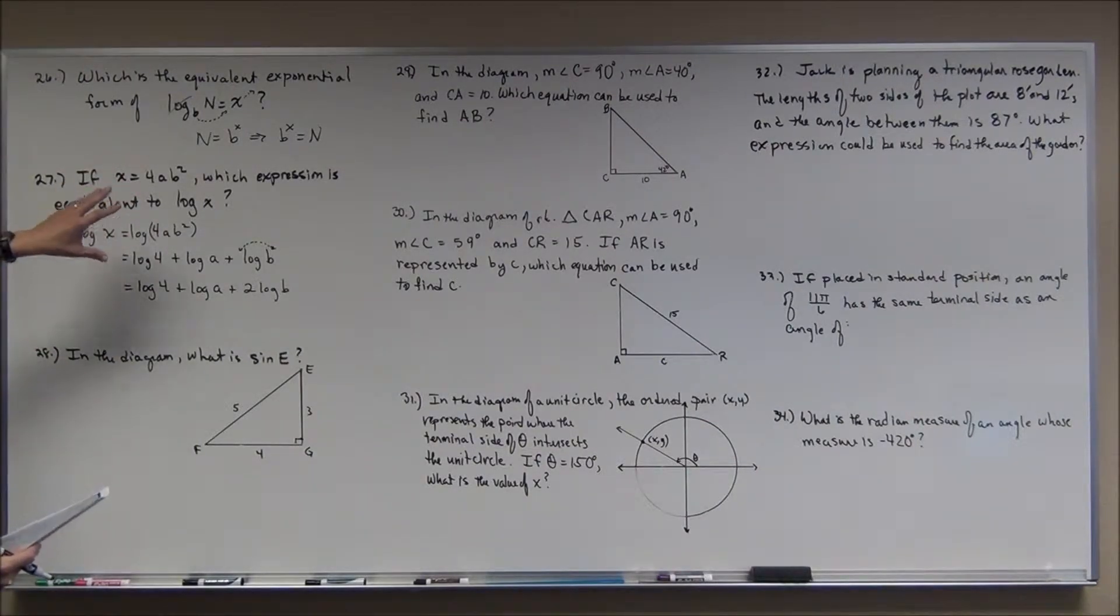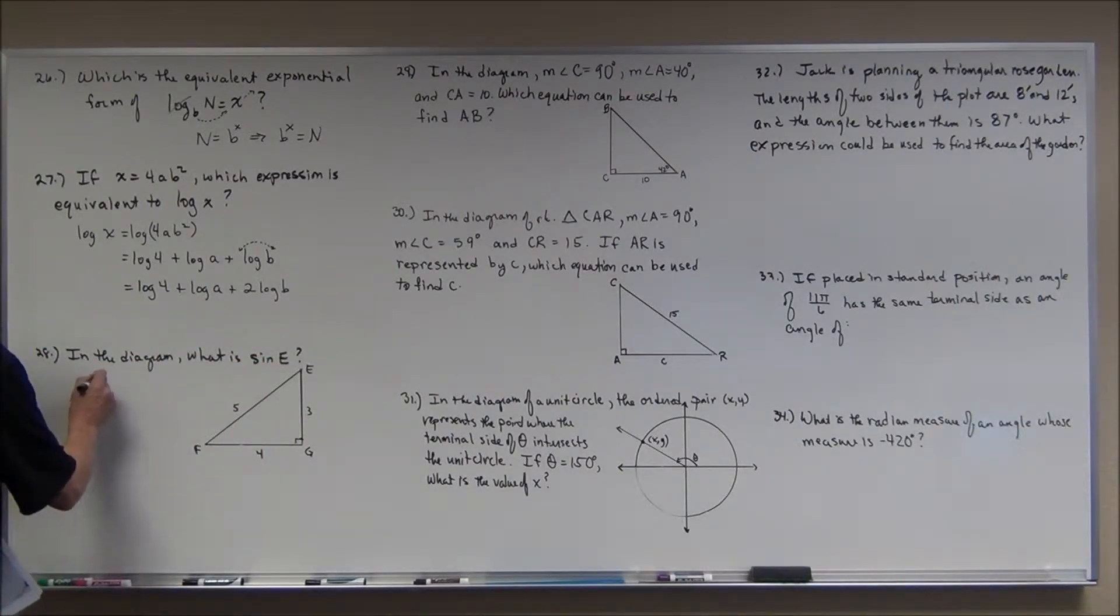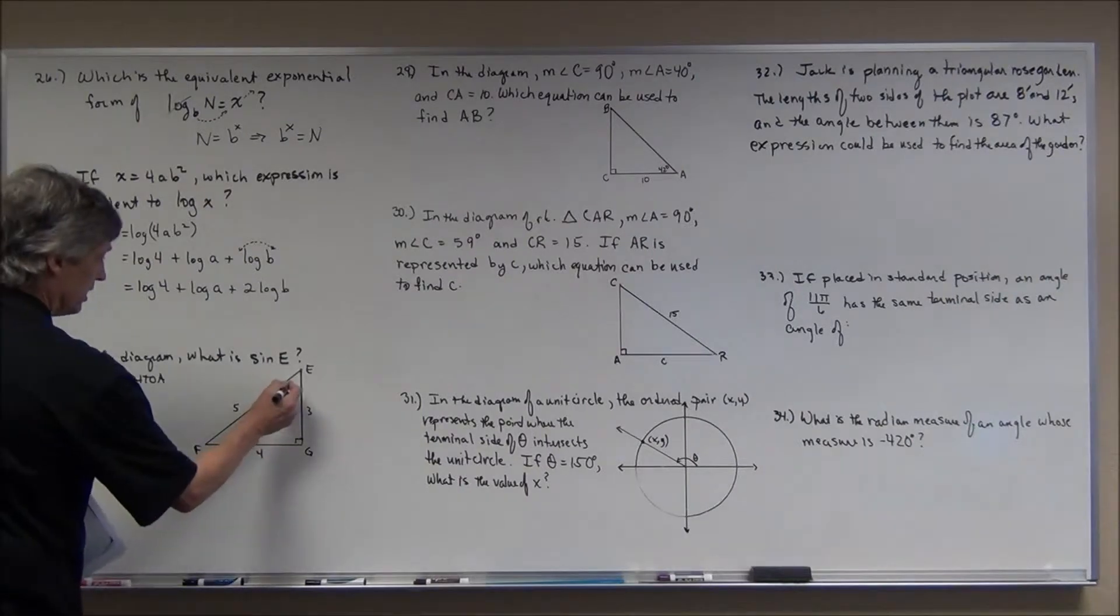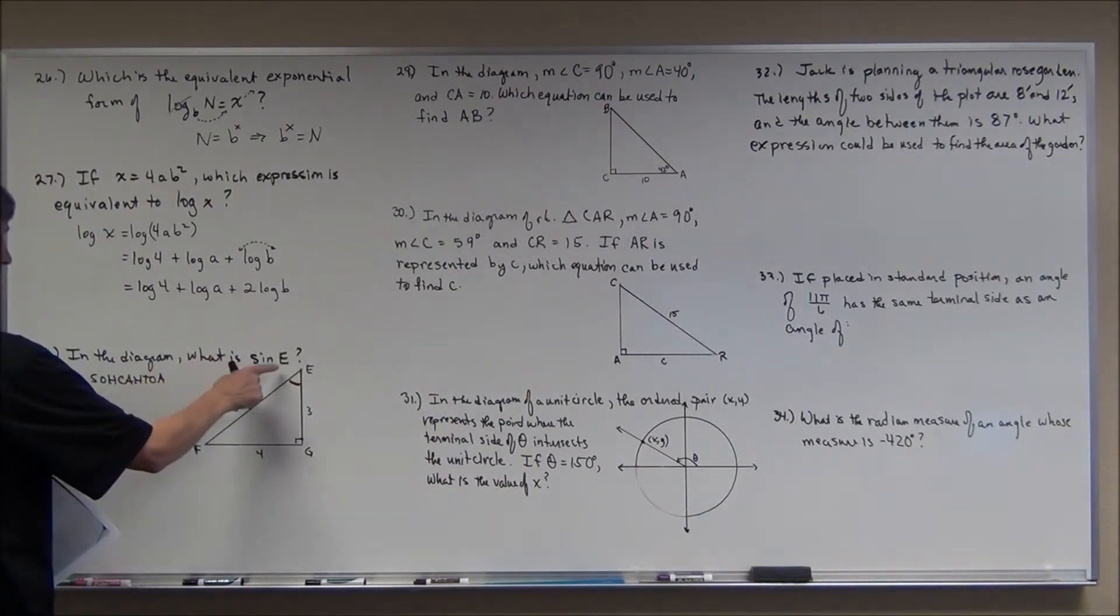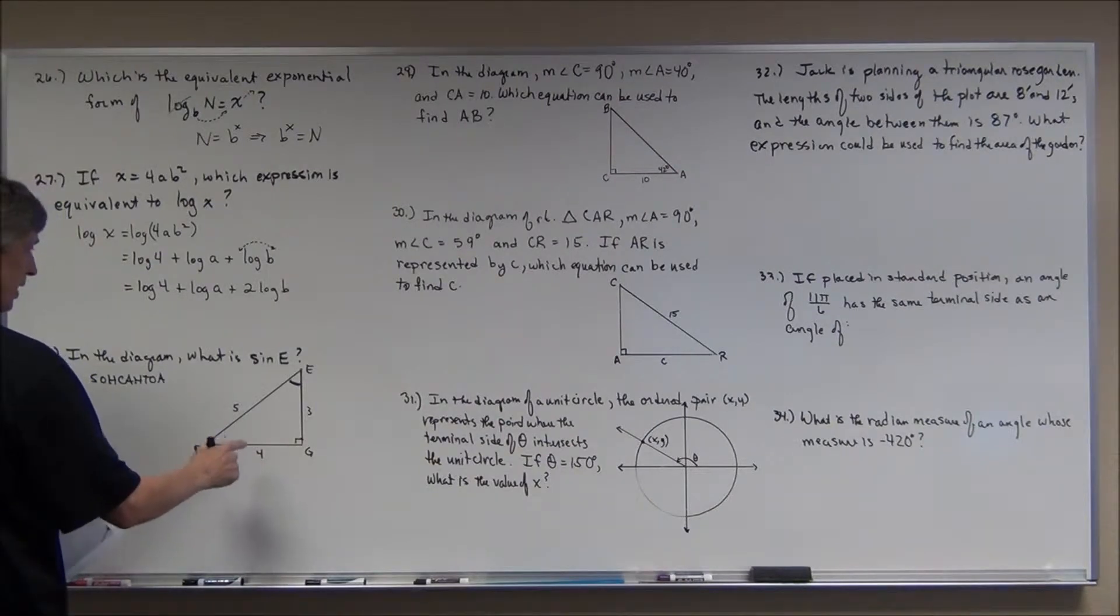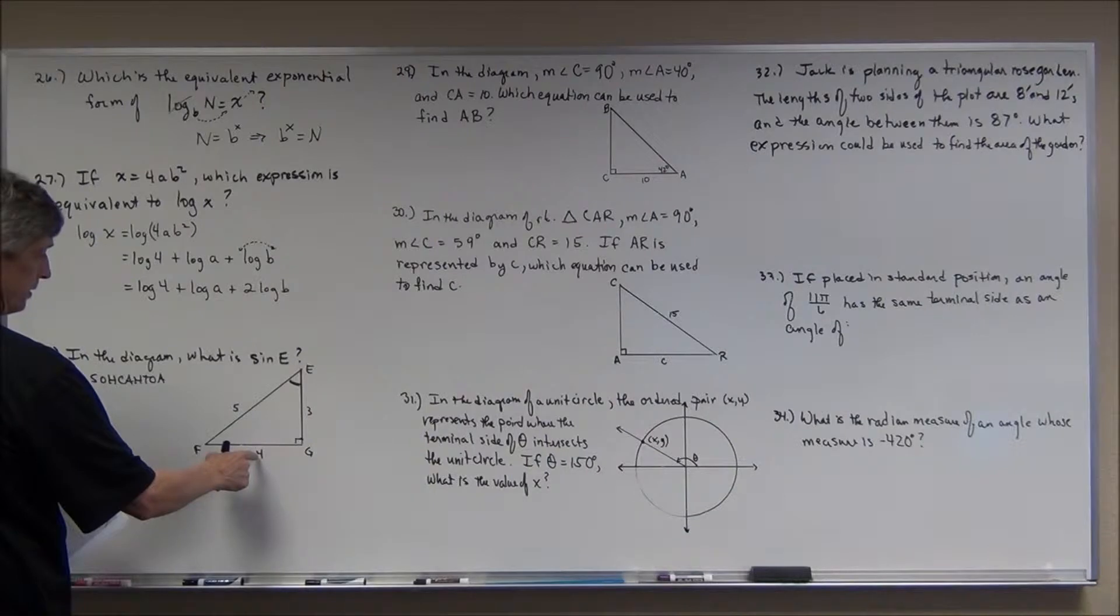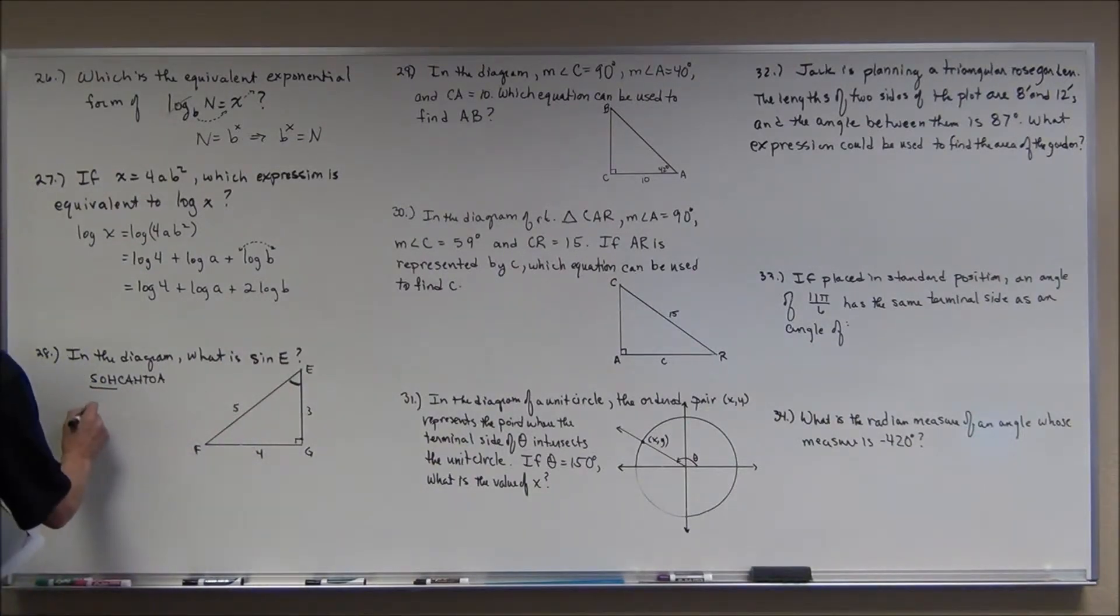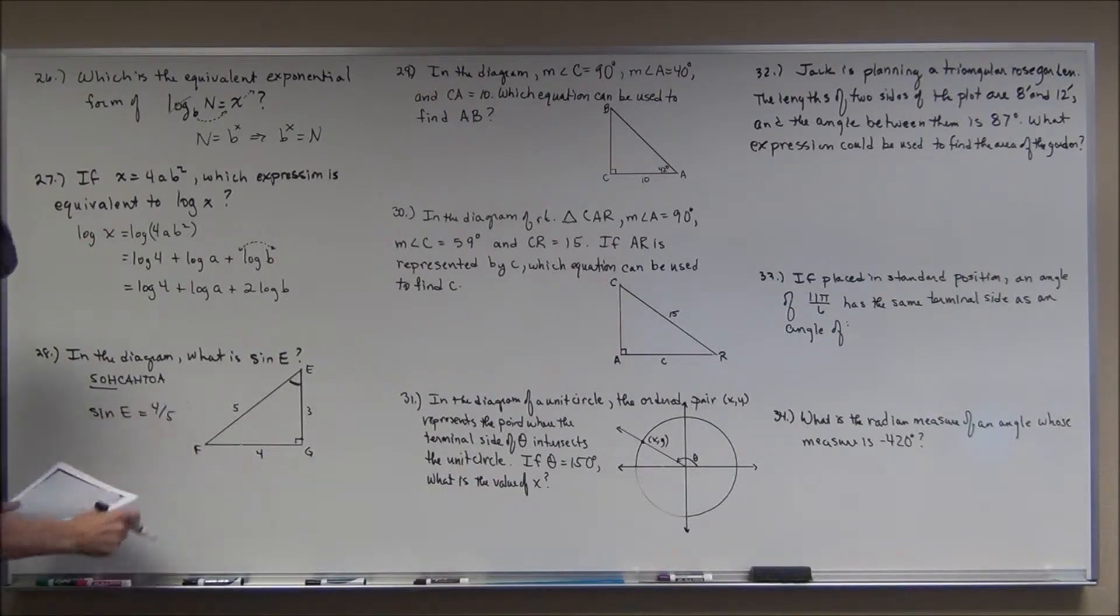All right. So that kind of ends it for logarithms. You can see that you need to know the properties. You have to be able to convert those back and forth. Now, all of a sudden, we get into a bunch of trigonometry, which is what you guys finished up with. In this diagram, what is the sine of e? Now, you have a right triangle, so this is where you use SOHCAHTOA. If you don't have a right triangle, then you've got to use the law of sines or the law of cosines. So the sine of e is 4 fifths. And hopefully that's a choice.